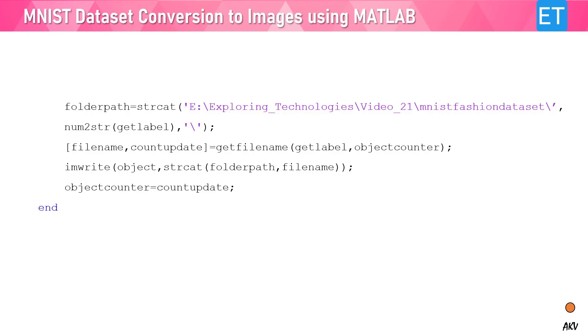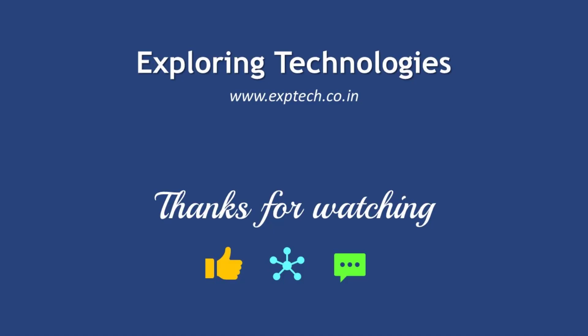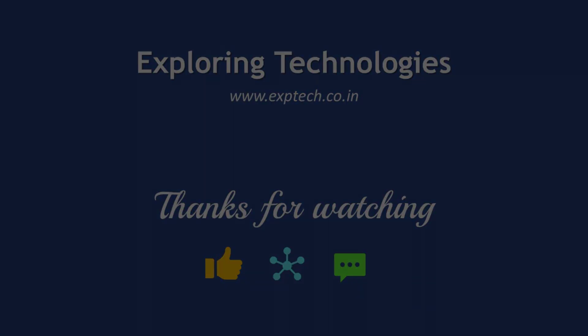This is how you can convert all the images of the test and train datasets of both the digit and fashion MNIST datasets into corresponding JPEG and PNG images. That's it for this video. I hope you have enjoyed it and liked it. Thank you all for watching, and stay tuned for more interesting videos. Goodbye.